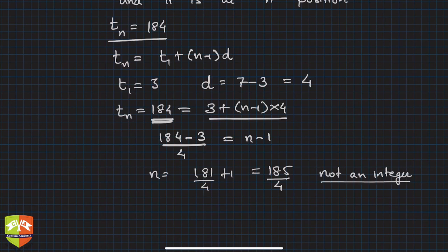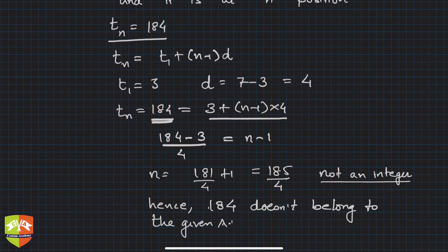But we know that if 184 exists at nth position, n must be an integer. Hence, we conclude that 184 doesn't belong to the given AP.